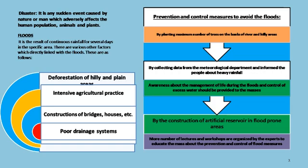The third is providing awareness to the masses about management of life during floods and control of excess water. The fourth is by construction of artificial reservoirs in flood-prone areas. The fifth is organizing a large number of lectures and workshops by experts to educate the public about flood prevention and control measures.